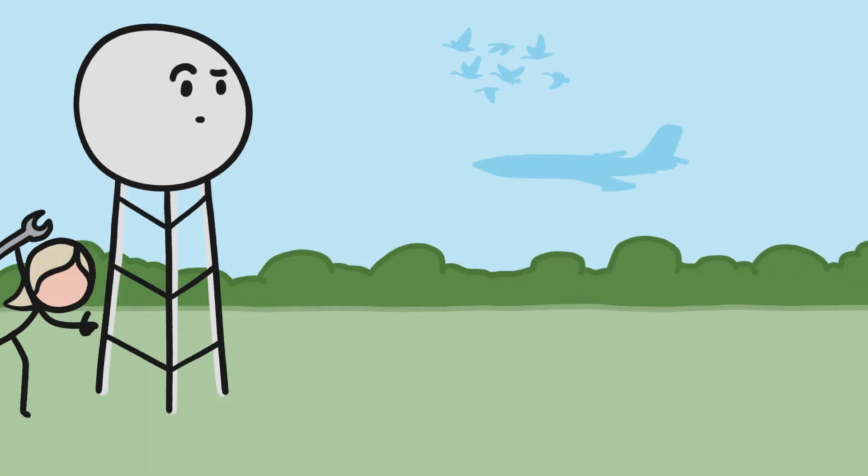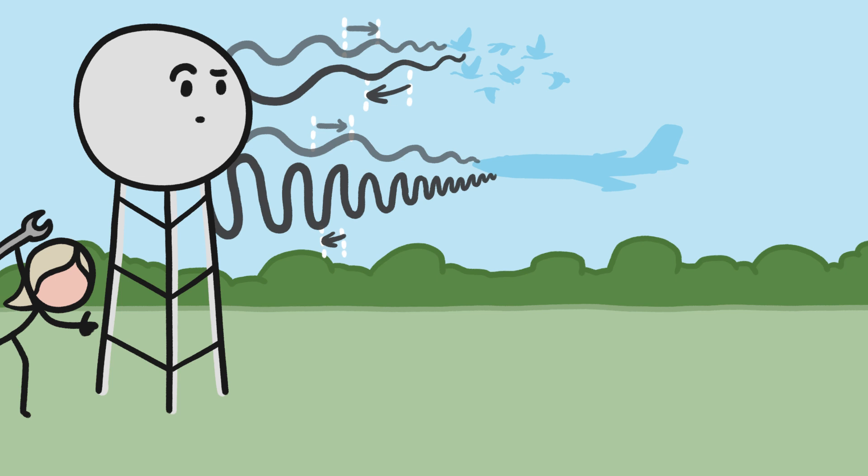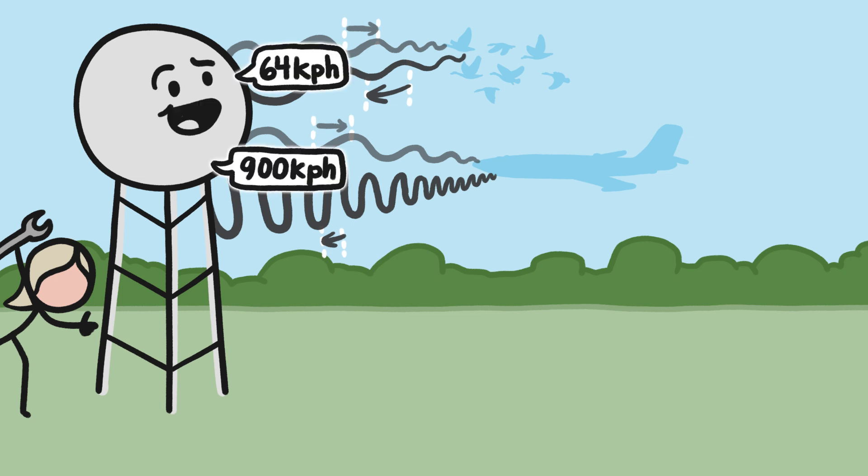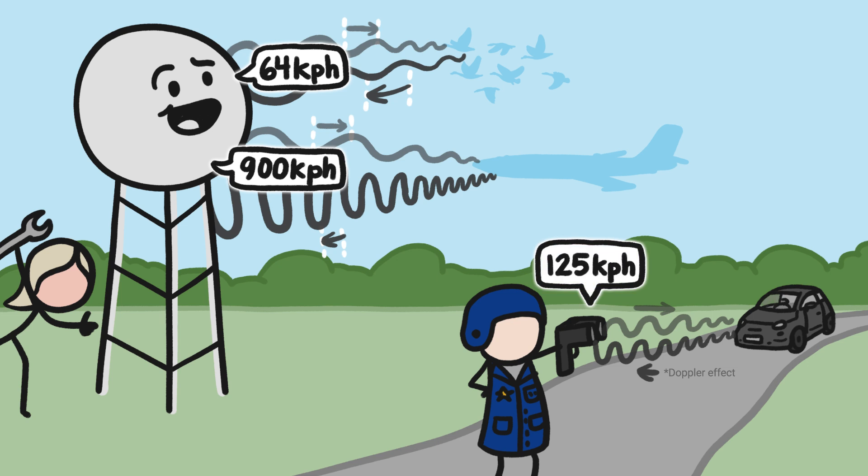For example, we've upgraded radar to detect shifts in wave frequencies, which gave us the ability to measure the speed of objects we were picking up in the sky, just like the radar that police use to catch speeders. This makes it easy to distinguish birds from planes that fly hundreds of kilometers per hour.